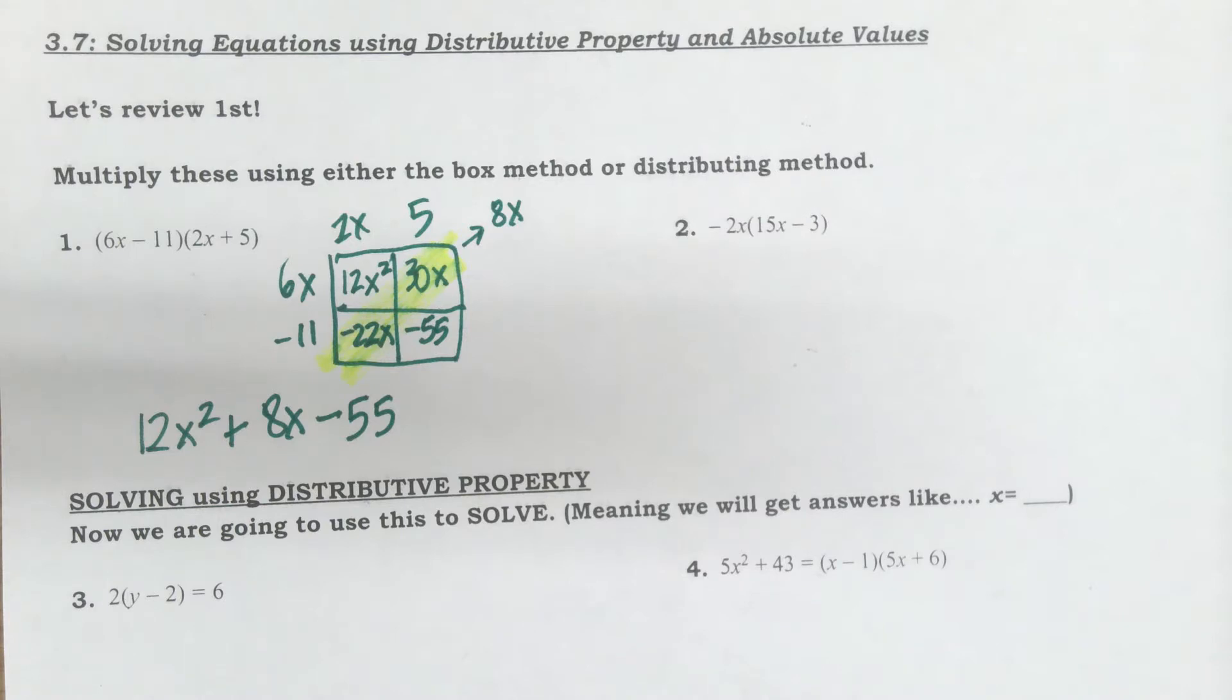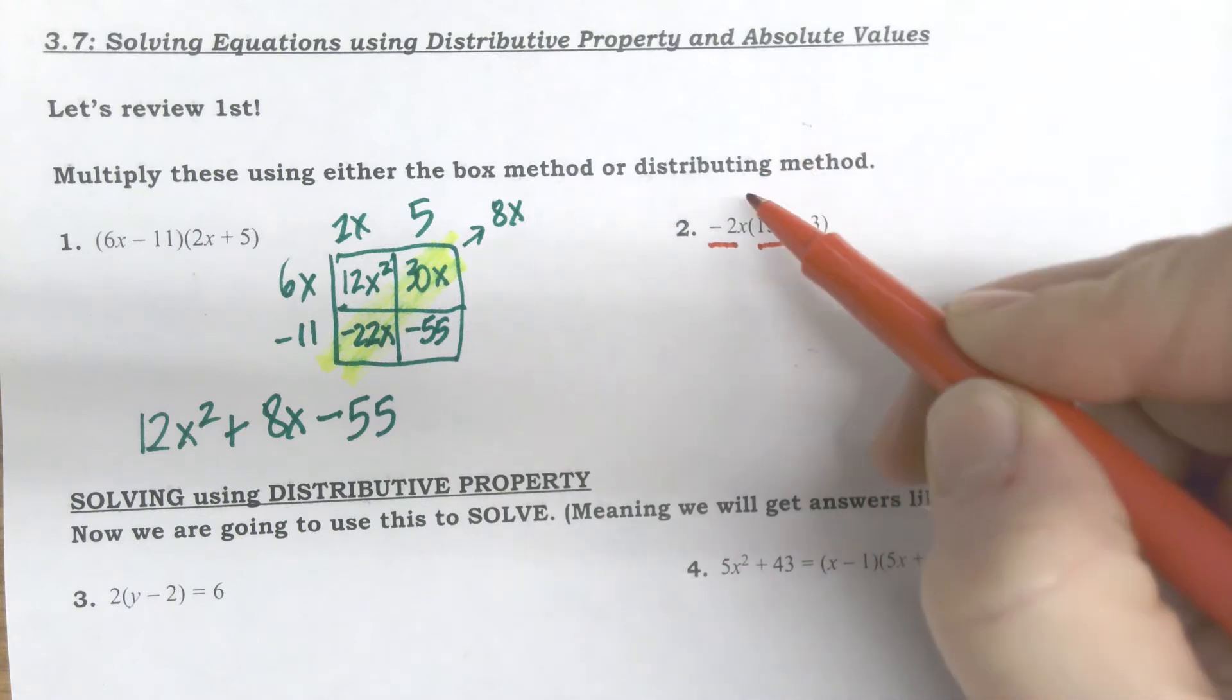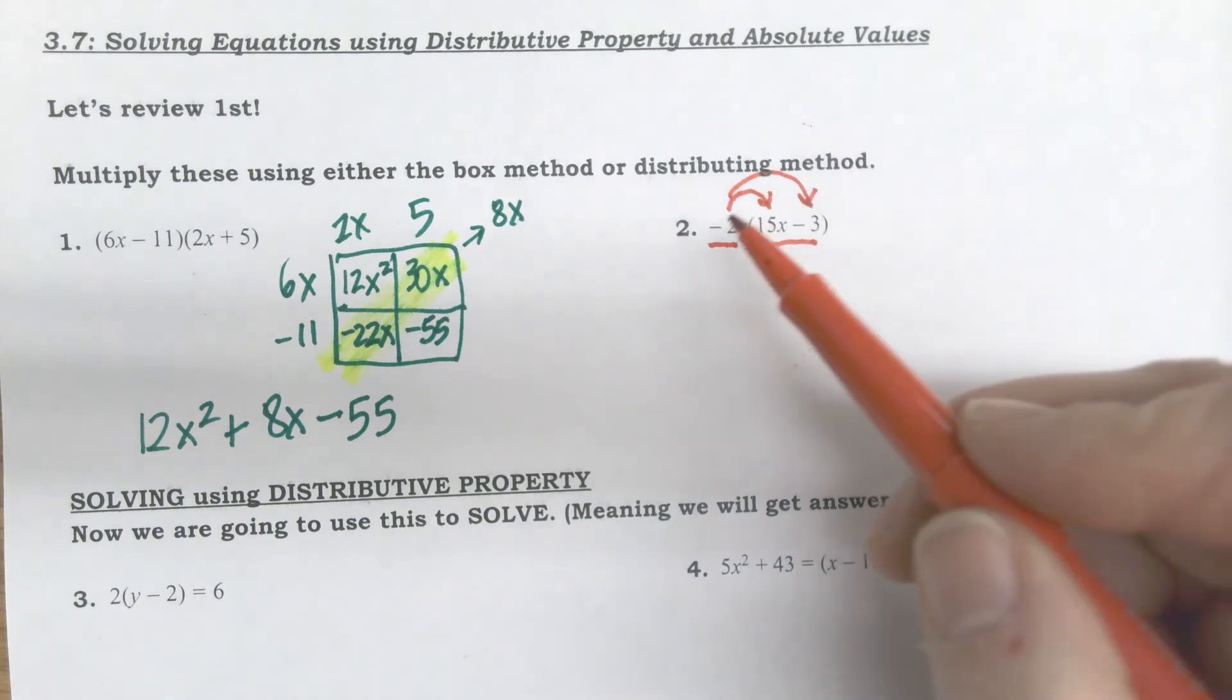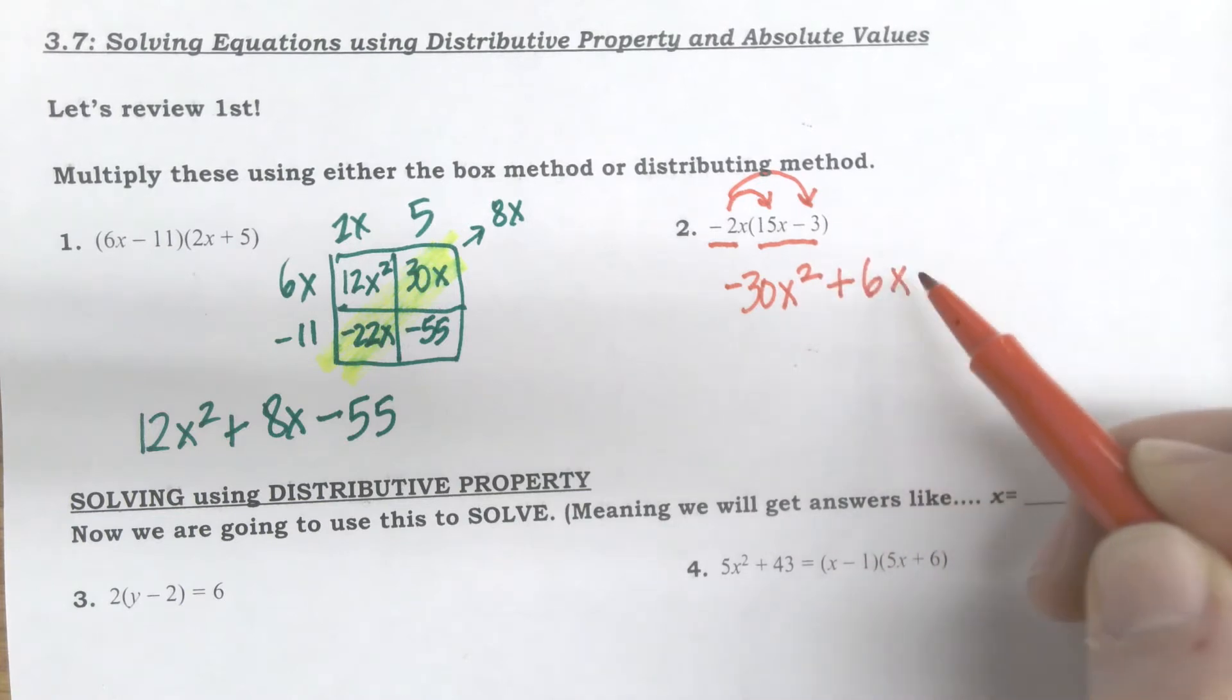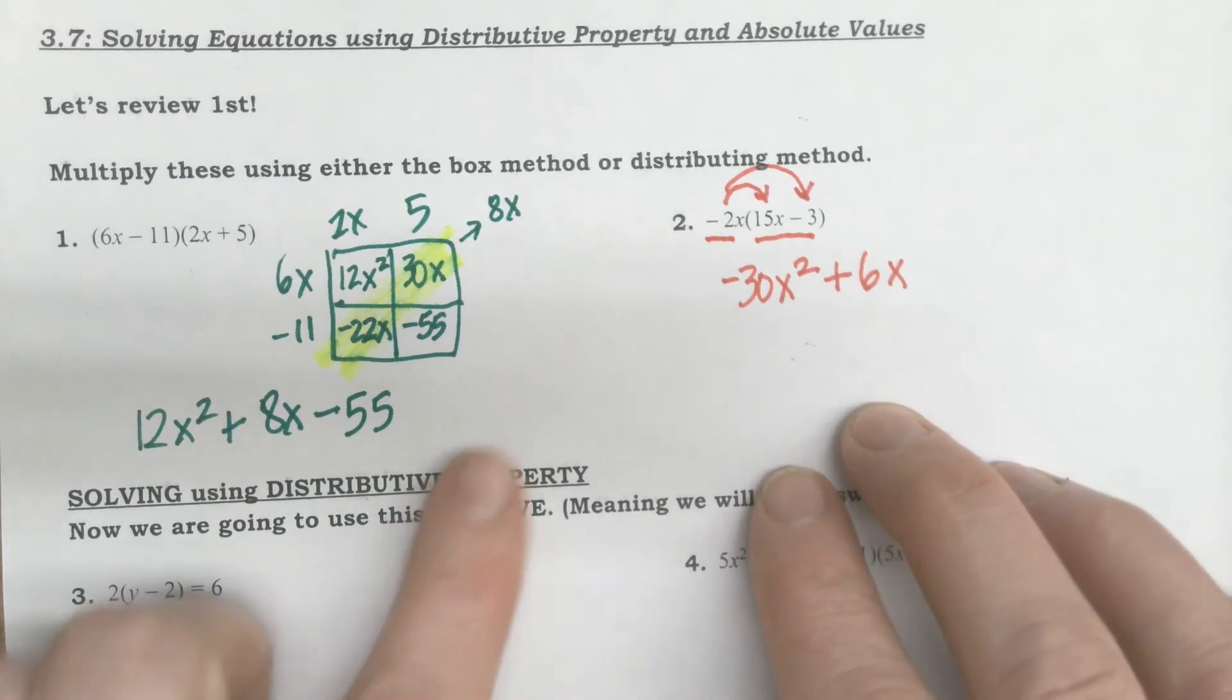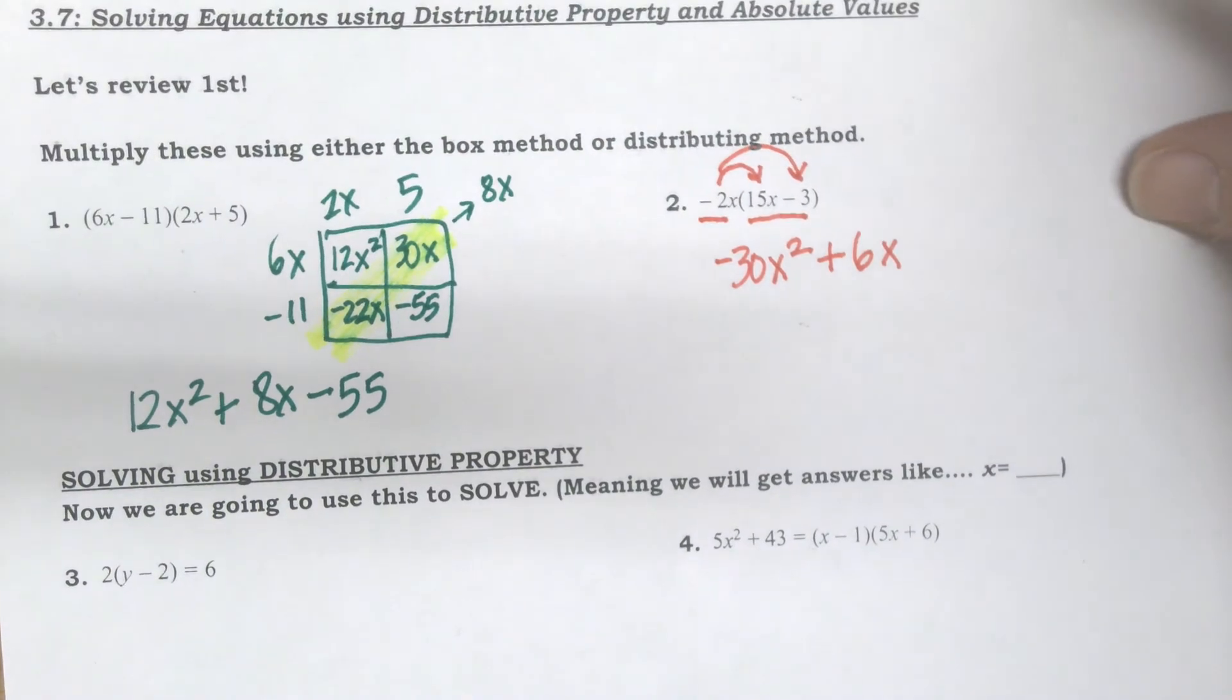The box method is very helpful for organizing. However, if I only have a monomial times a binomial or trinomial, sometimes it's quicker and easier just to distribute. And you've been doing the distributive property for a while. So this is negative two times fifteen is negative thirty x squared, x times x. And negative two times negative three is positive six. And then there was an x by the two, so I bring it down. So I'm done with that one. I didn't have to create the box. The distributive property came out pretty nice for those. Do however you need to do, but like I said, this is my recommendation. For the bigger ones, make a box. For the smaller ones, just distribute. So let's get into solving with the distributive property.